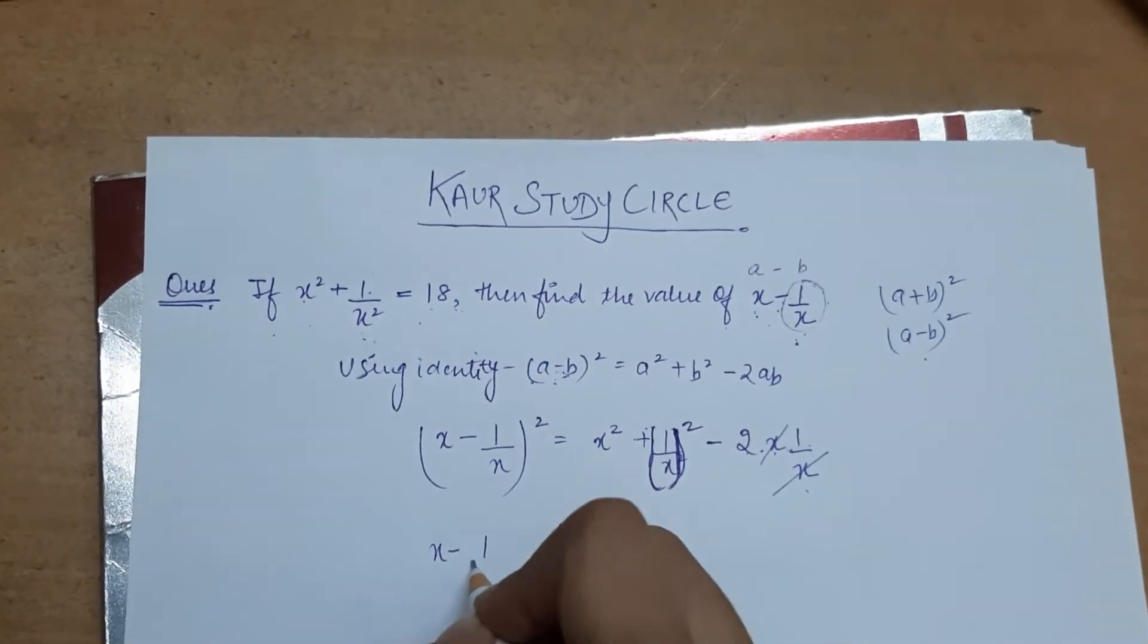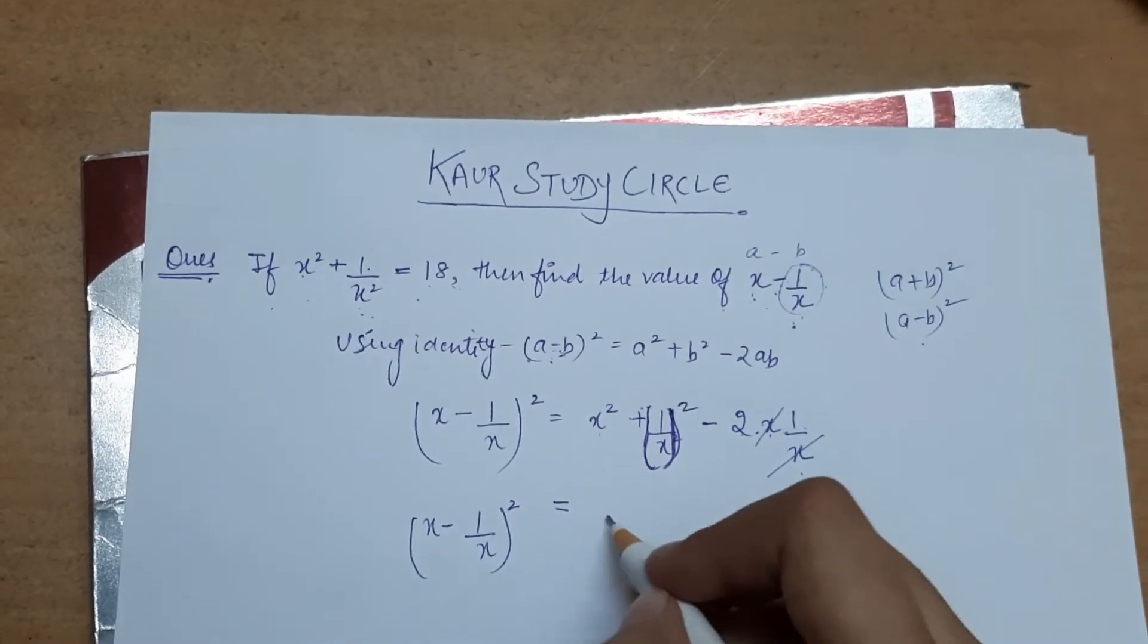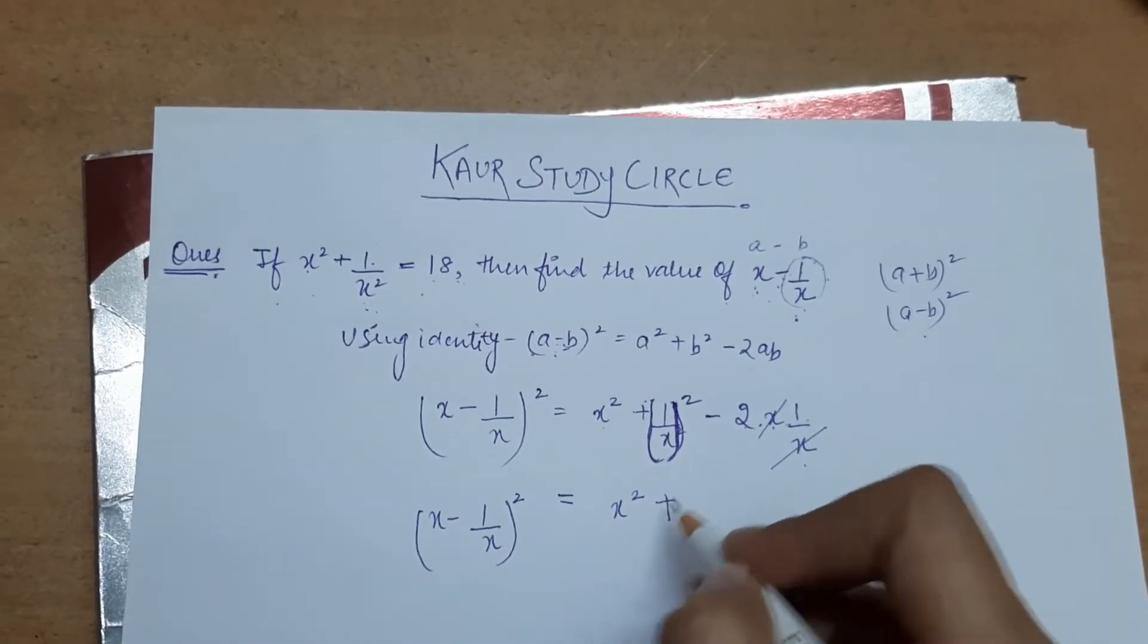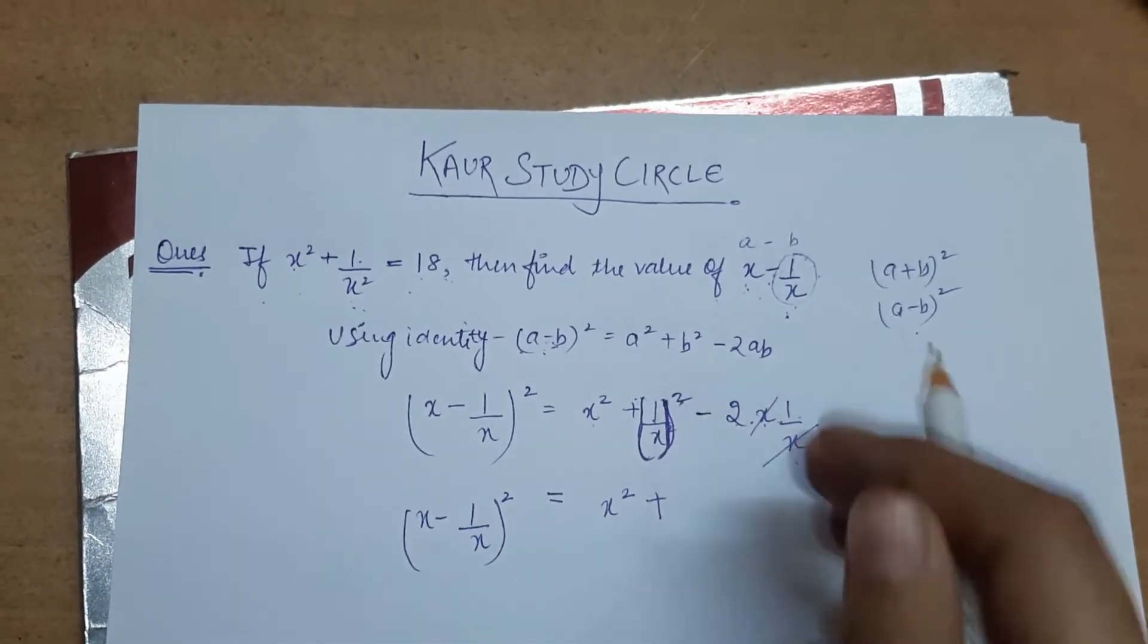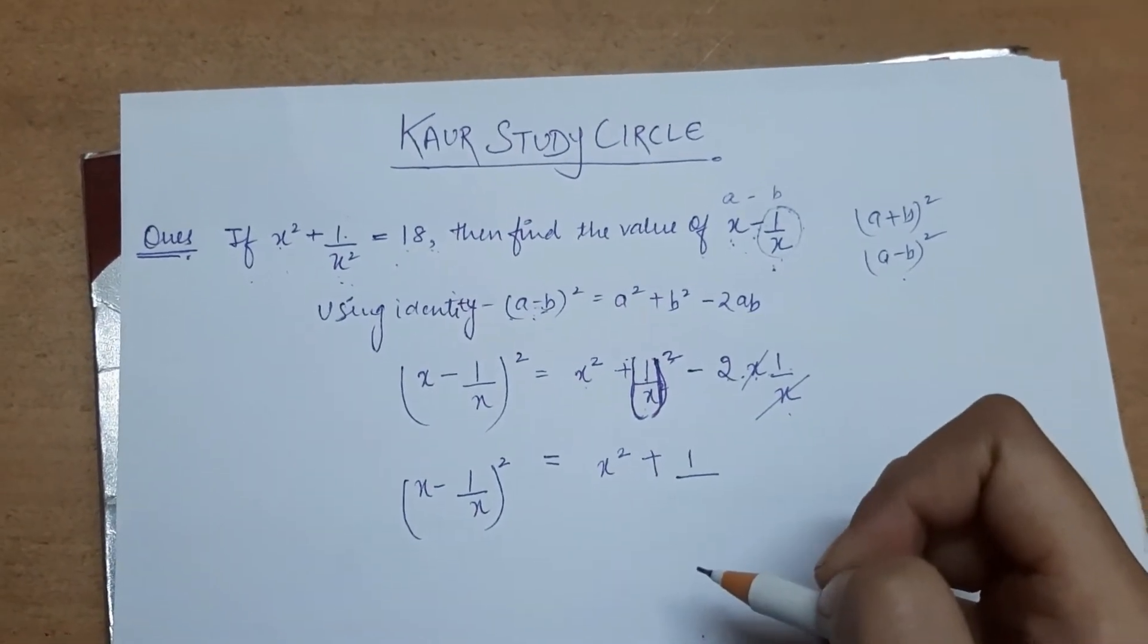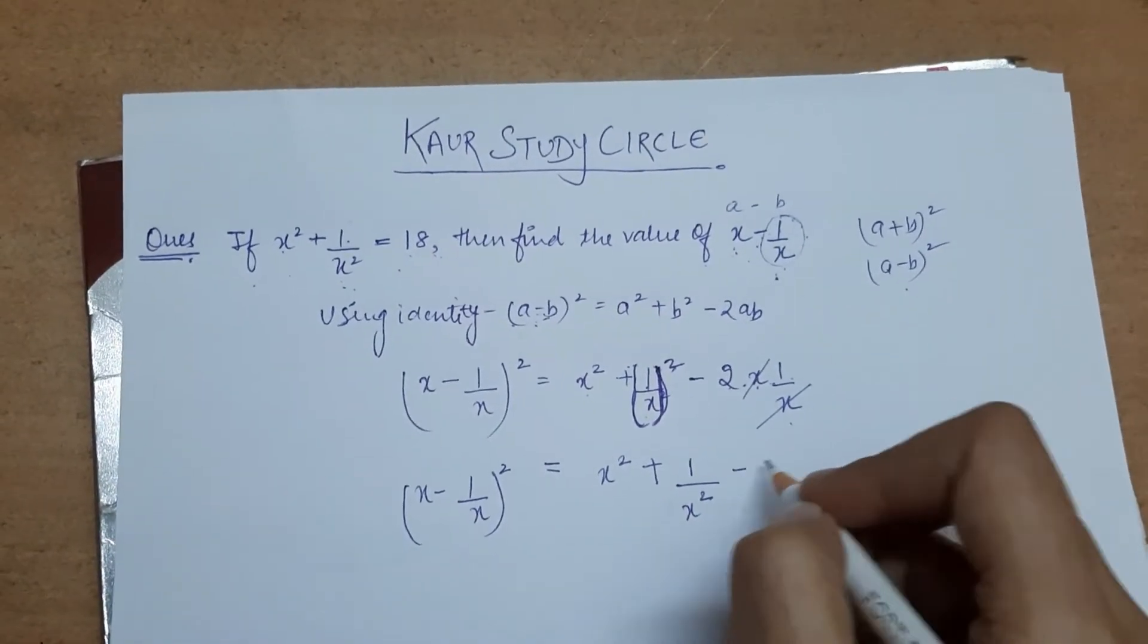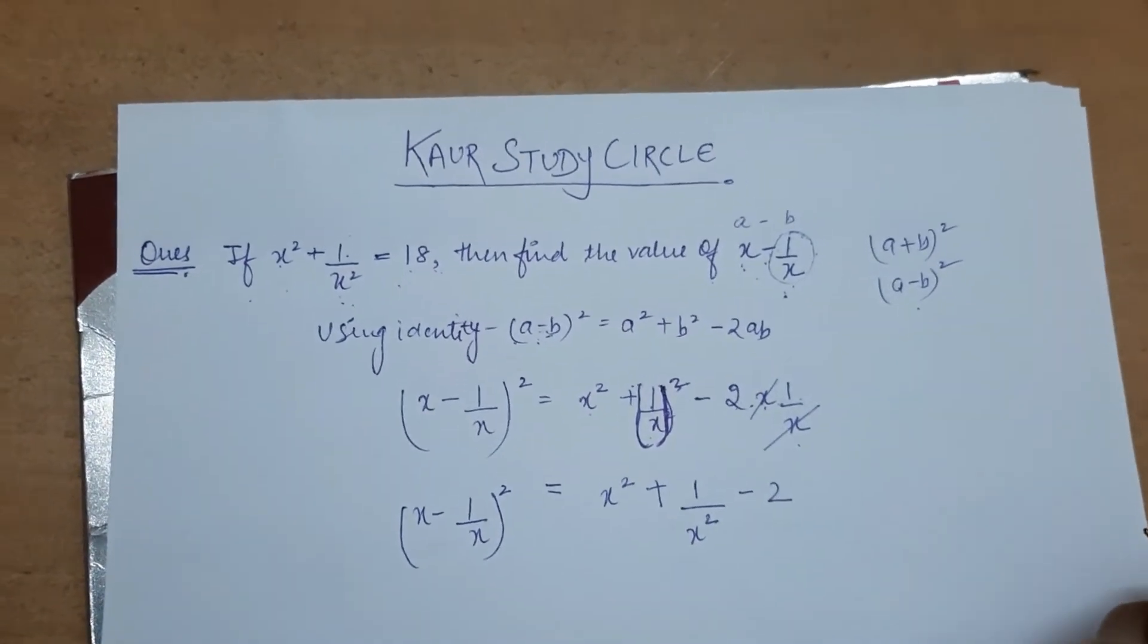Now what is left? 2 times 1 which is 2. Let's go ahead with the next step: x minus 1 by x whole square, and x square is again here plus what is 1 square? 1 square is 1, and x square is x square.